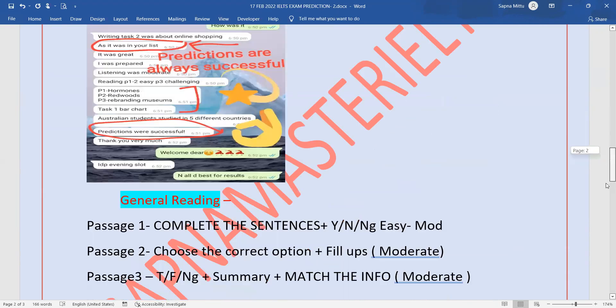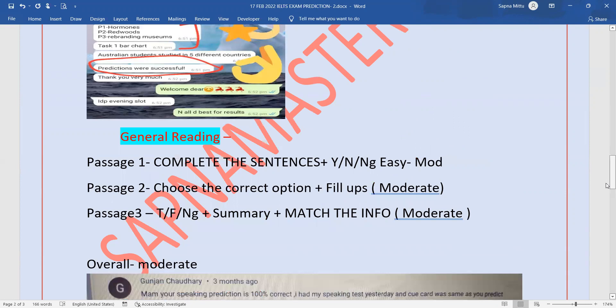For General Reading, complete the sentences or Yes/No/Not Given. Passage 2: choose the correct option—MCQs type—plus fillups. Passage 3 will be True/False/Not Given or summary or match the information. This will be moderate level.